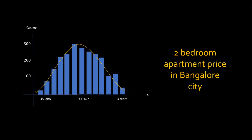For example, if you are looking at two-bedroom apartment prices in Bangalore city, most apartments on average cost around 90 lakh rupees. If you took samples of a few thousand property prices you'll see around 280 data samples at 90 lakh rupees. You will have very few data samples whose price will be on the higher end and very few on the lower end. Most values will be centered around average and as you go far away from the average the number of data samples reduces.